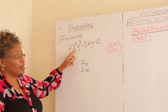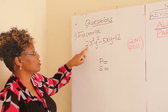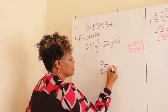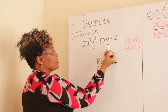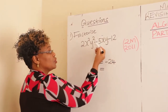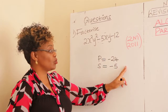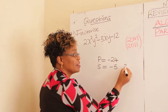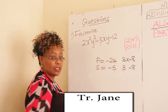You go to the quadratic expression and get your product. To get the product, you take the coefficient of the first term and multiply by the last term. So, 2 times negative 12 gives you negative 24. The sum comes from the middle term — the coefficient of the middle term is negative 5. Get the two numbers that add to give negative 5 and multiply to give negative 24. Those numbers are 3 and negative 8: 3 plus negative 8 gives negative 5, and 3 times negative 8 gives negative 24.